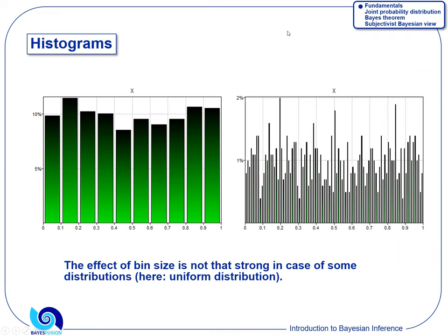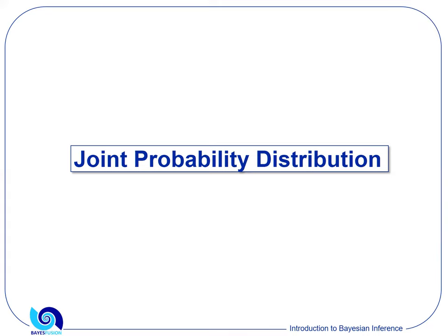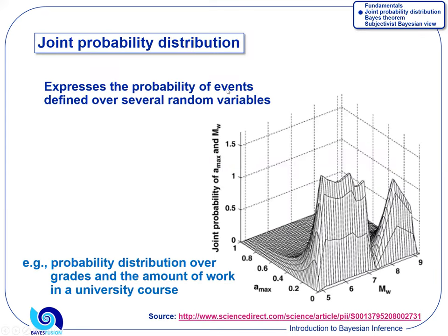Much more important in the whole field of modeling is the joint probability distribution. The joint probability distribution expresses the probabilities of events defined over several variables. Think of it like a three-dimensional map: you can see combinations of values of two variables that are much more likely than others. For example, small values of AMAX with smaller values of MW are very likely — you see a mountain here — and then combinations where AMAX is large are rather unlikely.